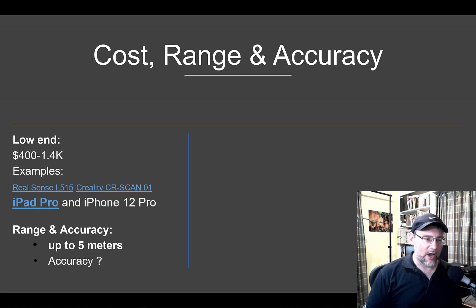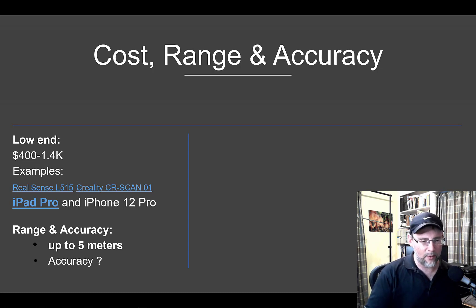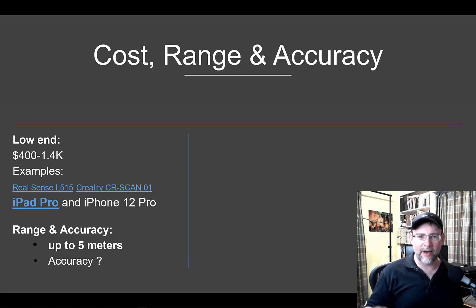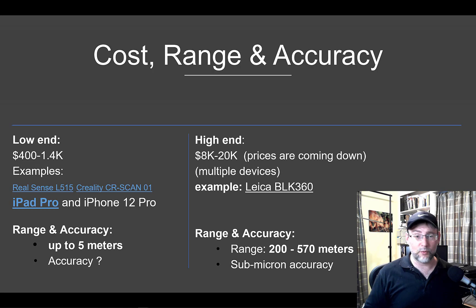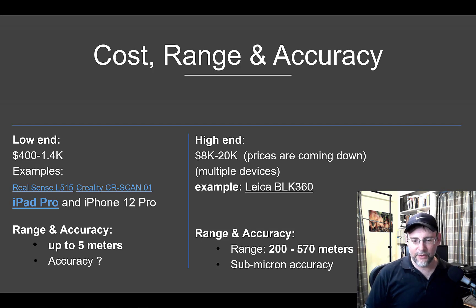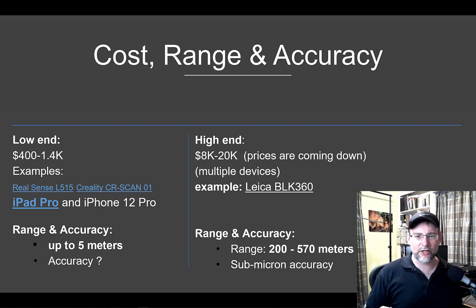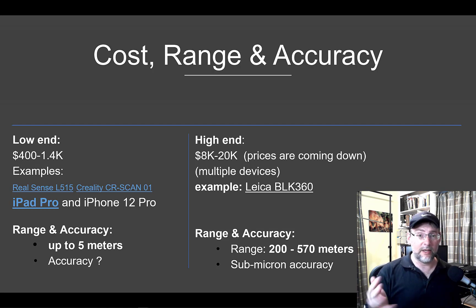In terms of cost, range, and accuracy: on the low end, $400 to around $1,400 — I've been using the iPad Pro, which came out with the LiDAR sensor last summer, and so did the RealSense L515 camera. The range is typically up to about 5 meters with the iPad Pro. On the high end, we're starting at around $8,000 to $20,000 — not bad considering 10 years ago it was like $75,000 for a piece of equipment. The accuracy and range of the high end is much bigger: 200 to 500 meters with submicron accuracy, like 0.3. One thing I wasn't able to get a specific answer on is the exact accuracy of the iPad — if anyone watching knows, please post it in the notes below.